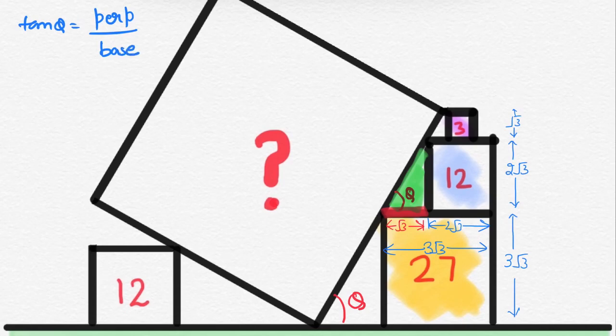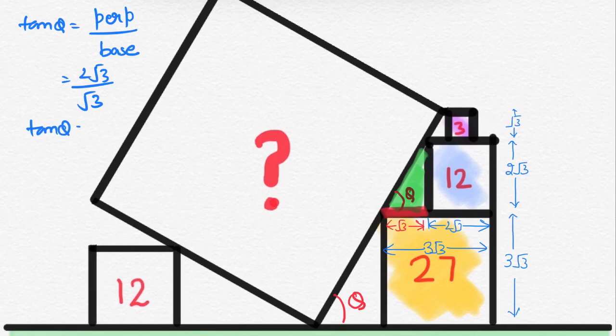And in this green triangle, perpendicular is 2 root 3 and base is root 3. So, here tan theta will be 2.